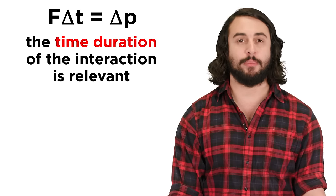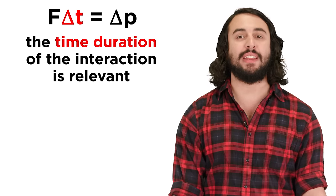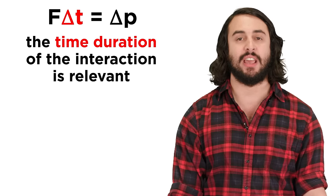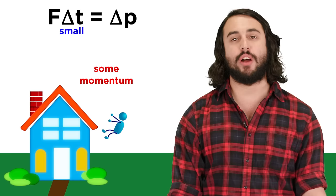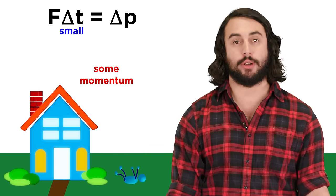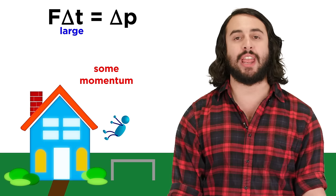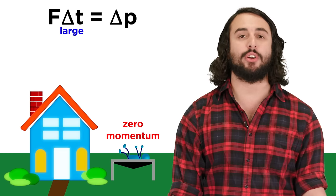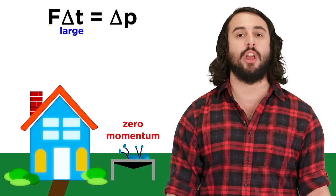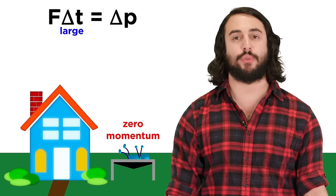Another ramification of this theorem is that the force imparted on a moving object when it strikes some surface will be very large if the impact is instantaneous, and much less if the impact involves some time duration. If you fall off your roof onto the ground, it will hurt, but if you fall onto a trampoline it won't be as bad, because the change in momentum imparted on your body, instead of happening instantly, will be delivered over the entire duration of your contact with the trampoline surface as it stretches from the force of your fall.